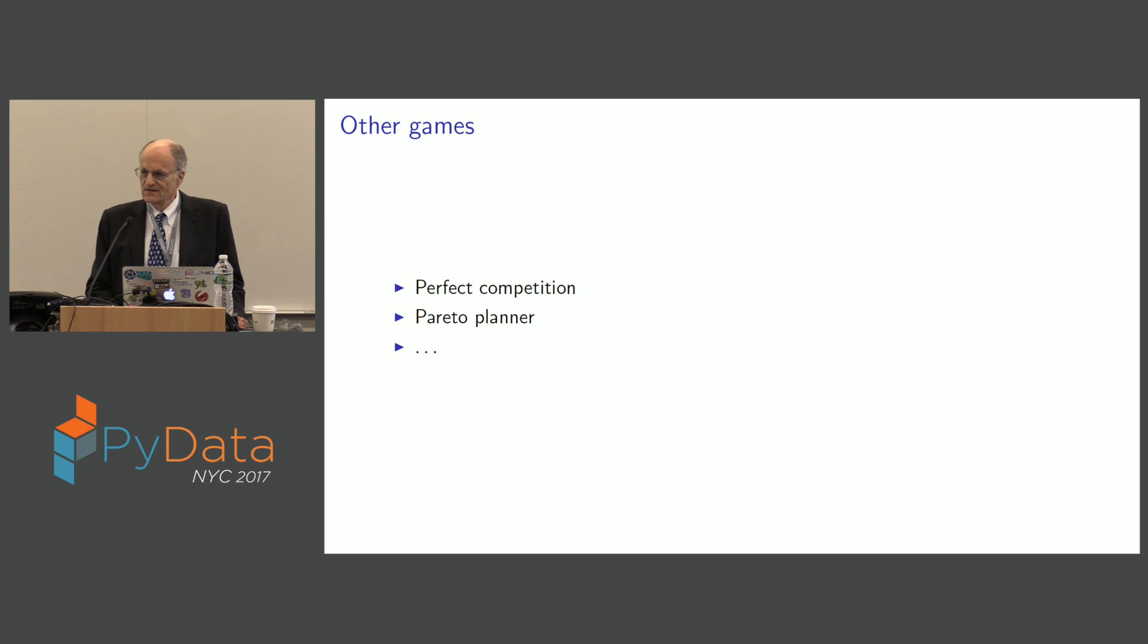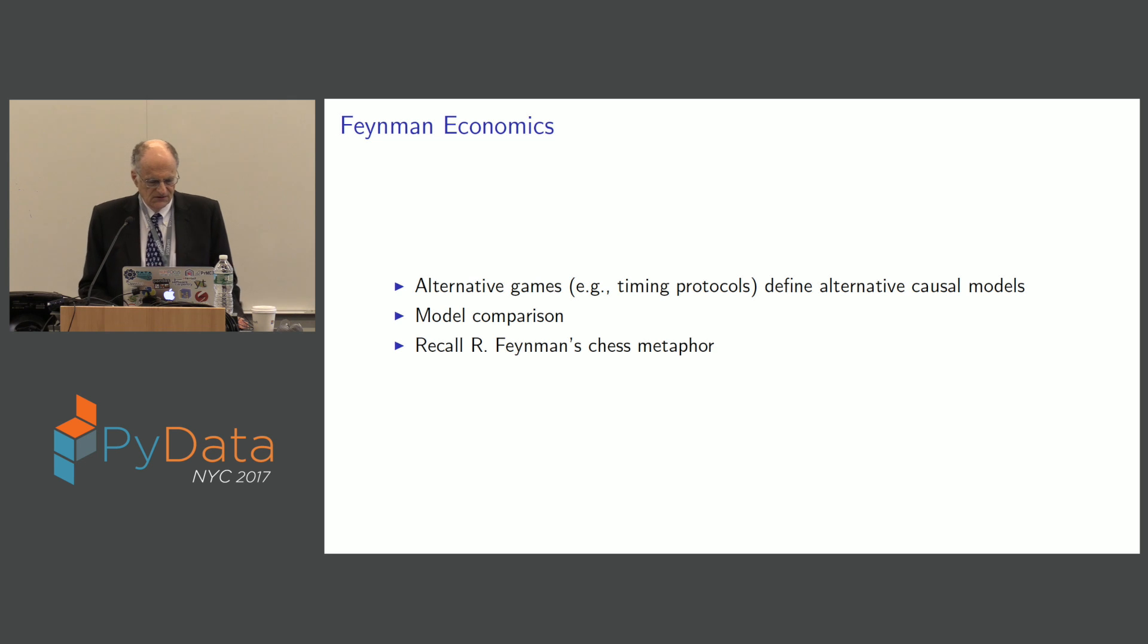So there's other games. There's perfect competition. There's a Pareto planner. There's all sorts of things, even with this setup. So now I'm thinking about Feynman again. So our job is to figure out from the data which game's being used. So notice what I've done. Change those games, I change the model. Name of a model is a likelihood function. With enough structure, I give that to Andrew Gelman and Stan and his team and pray if something comes out. So alternative games define alternative causal models. And then we want to compare models. That's what economists are supposed to be doing.